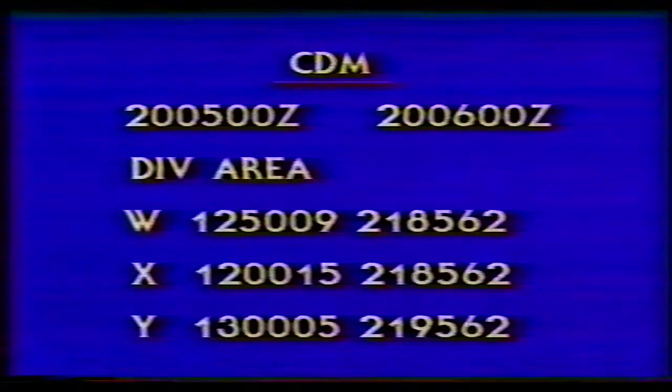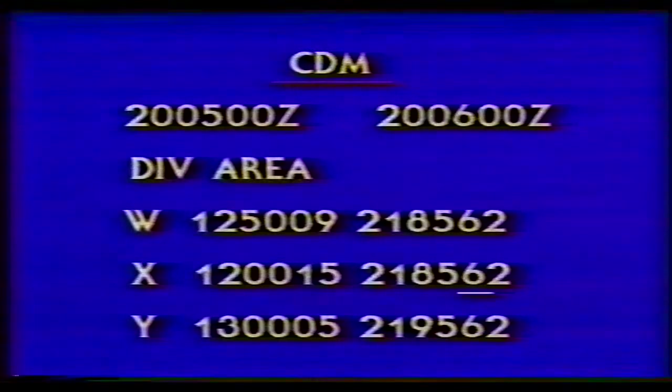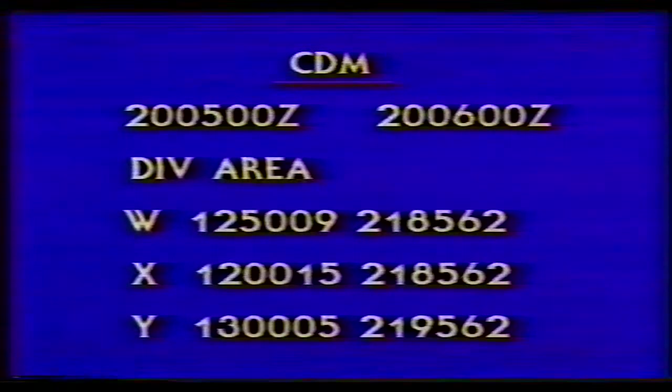The tenth digit gives the humidity reading. The number five represents a humidity level between 50 and 59 percent. The eleventh digit in the chemical downwind message is coded information for significant weather phenomena; the six indicates rain. The last digit in the CDM is coded information for cloud cover. In this code, the two indicates the sky is more than half covered by clouds.